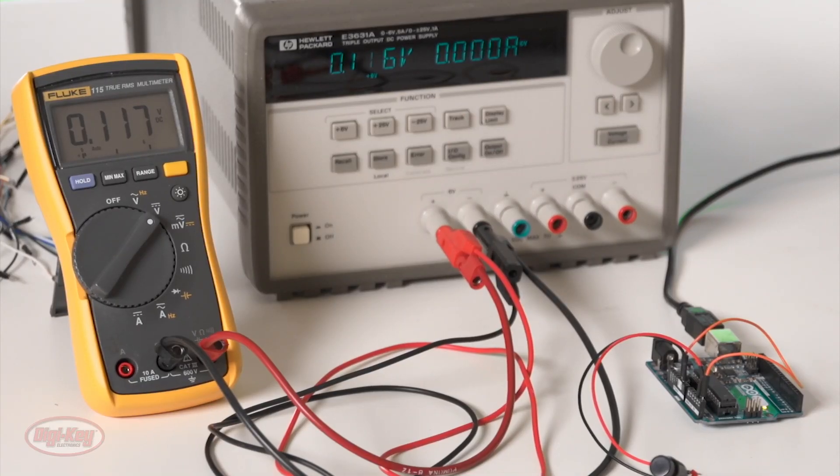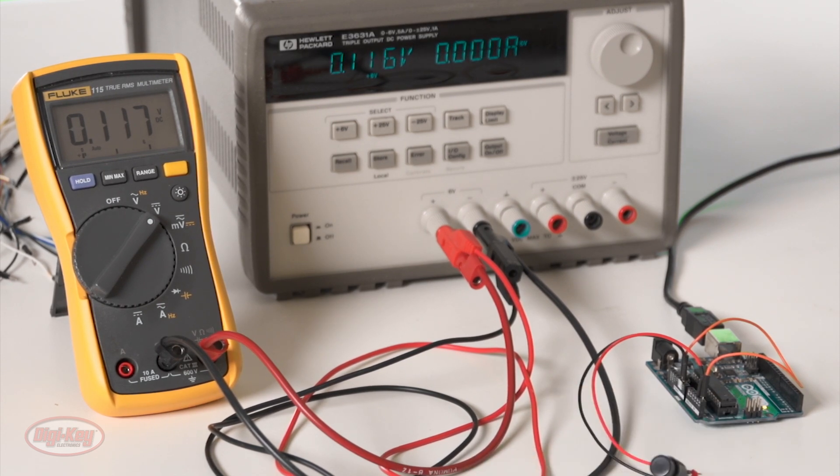This Arduino has 6 analog inputs, but they all share, or are muxed, to the single ADC. This means that only one input at a time can be used, but you can sequence through the inputs to measure the value on each. The read time is about 0.1 milliseconds,